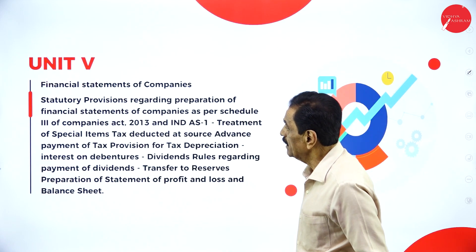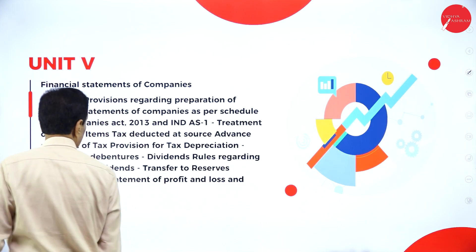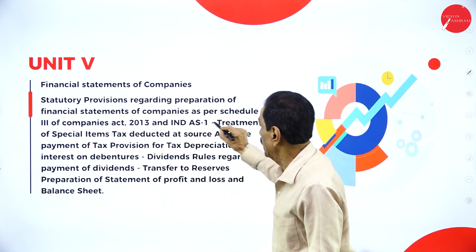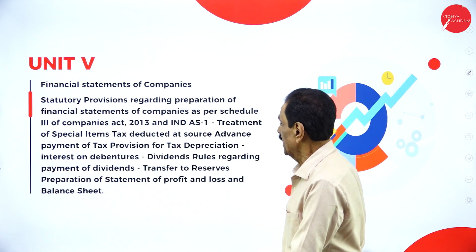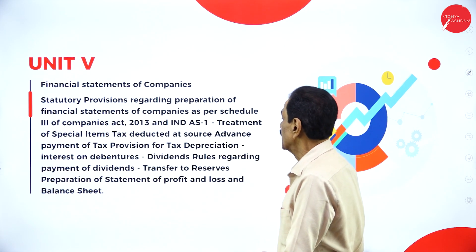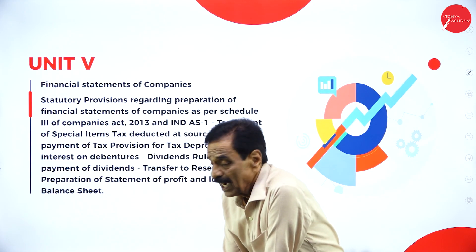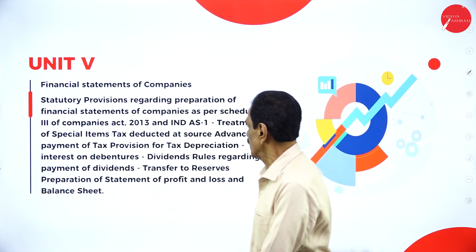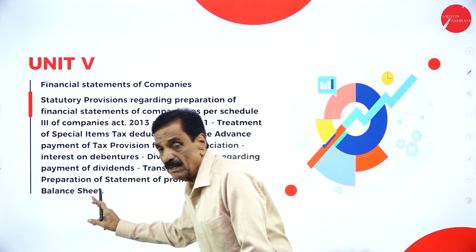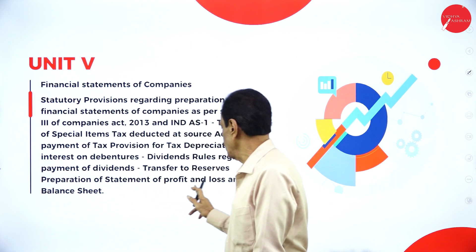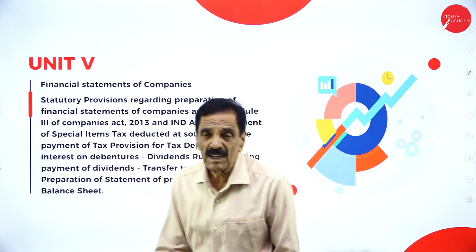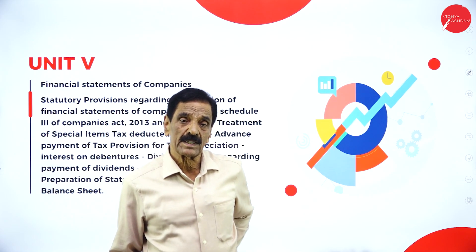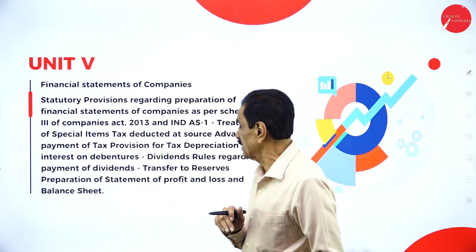Unit 5 — Financial Statement of Company — covers statutory provisions regarding preparation of financial statements as per Schedule III of the Companies Act 2013 and Indian Accounting Standards, treatment of special items: tax, advance payment of tax, provision for tax, depreciation, interest on debentures, dividend, rules regarding payment of dividend, and transfer to reserves. We are going to prepare the Statement of Profit and Loss and Balance Sheet as per the Companies Act 2013 — not the regular format.